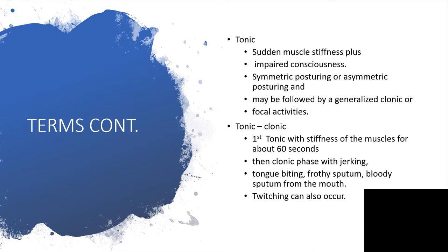When it is followed by generalized clonic, we have what is called generalized tonic clonic seizures or grand mal. Tonic clonic. That is tonic followed by clonic contractions. The first to occur will be tonic phase with stiffness of the muscles affected and that is going to have short duration of time for just about 60 seconds. Then the clonic phase will follow and that will involve the jerking of the affected muscle or the limbs or the entire body.